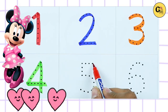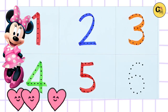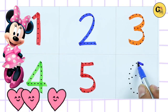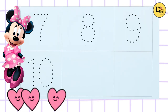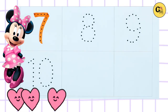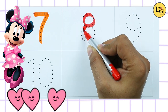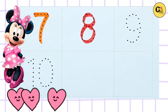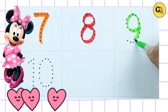Number five with red color. Number six with blue color. Number seven with orange color. Number eight with red color. Number nine with green color.